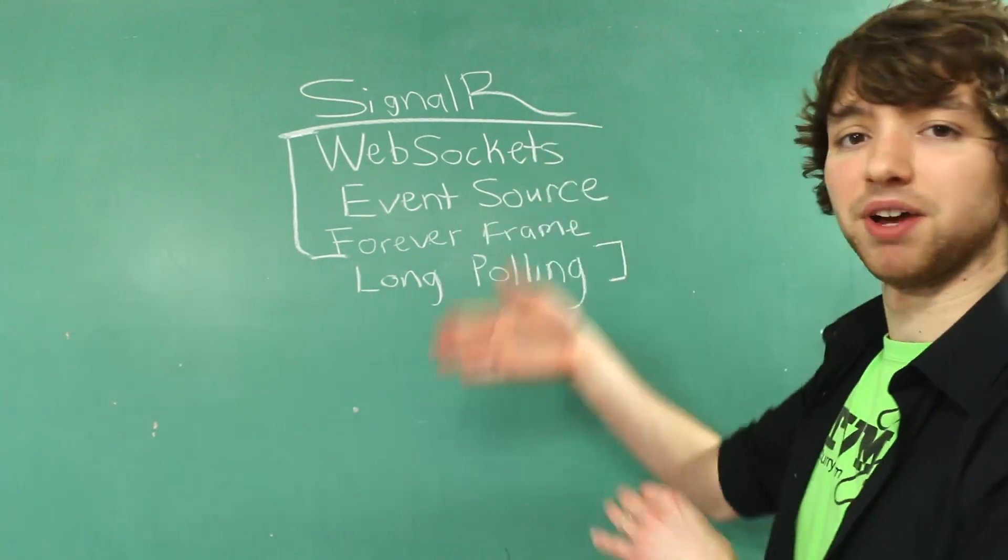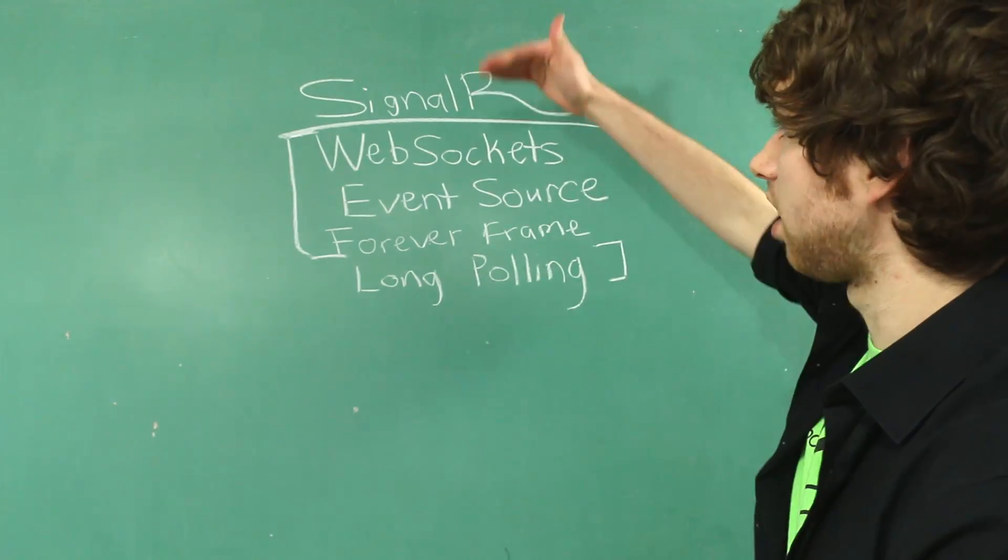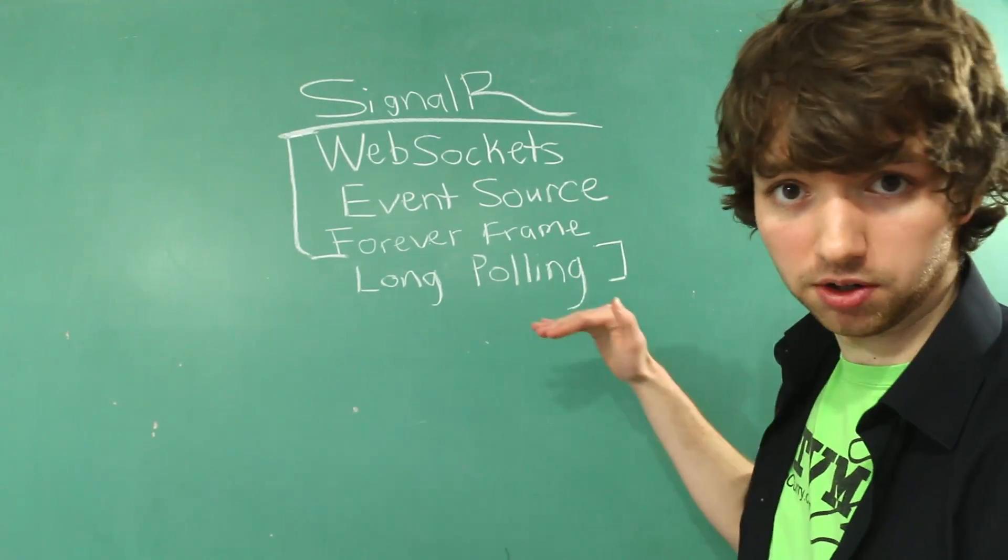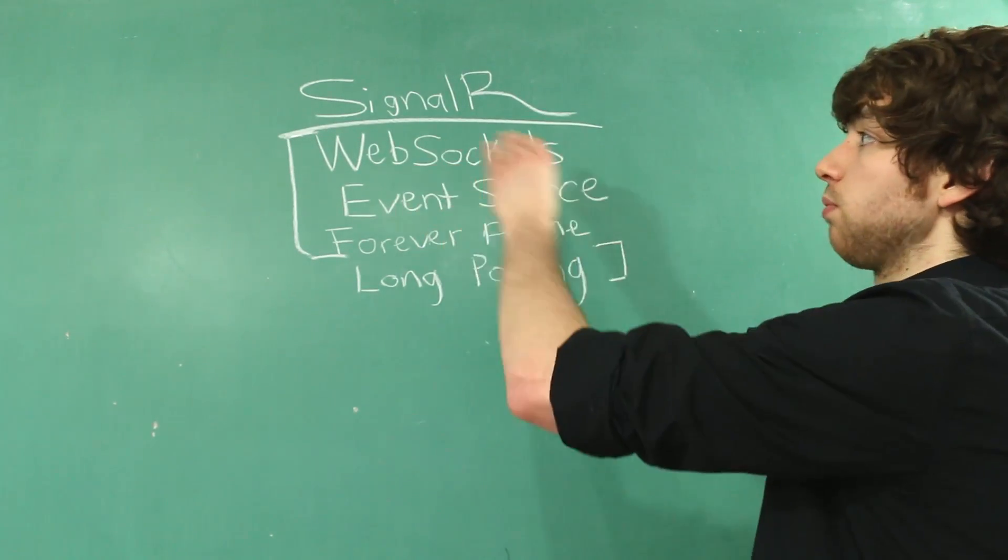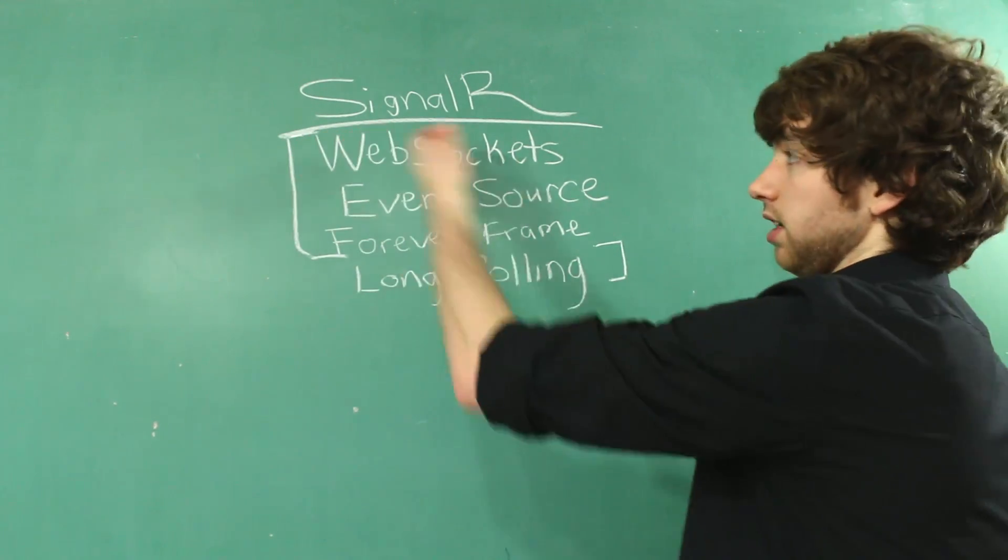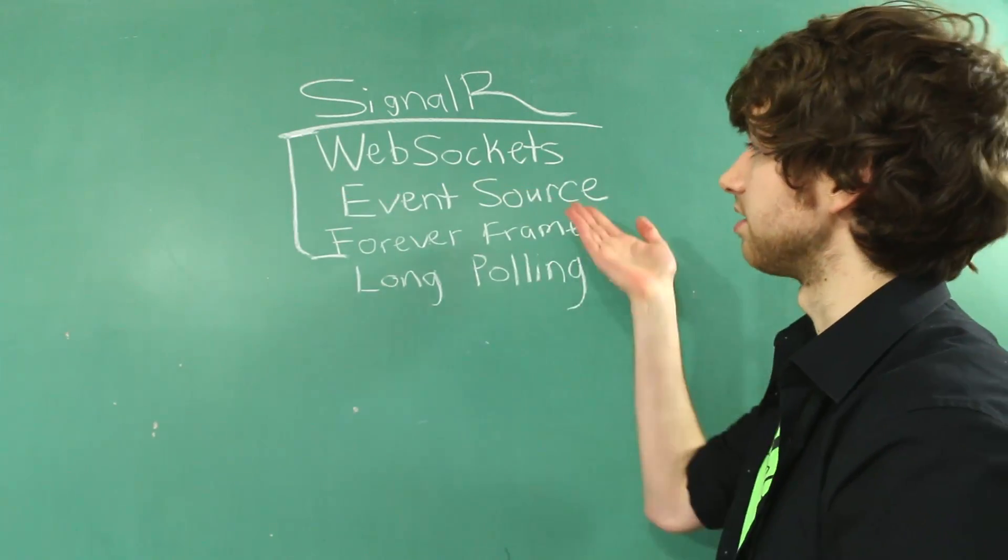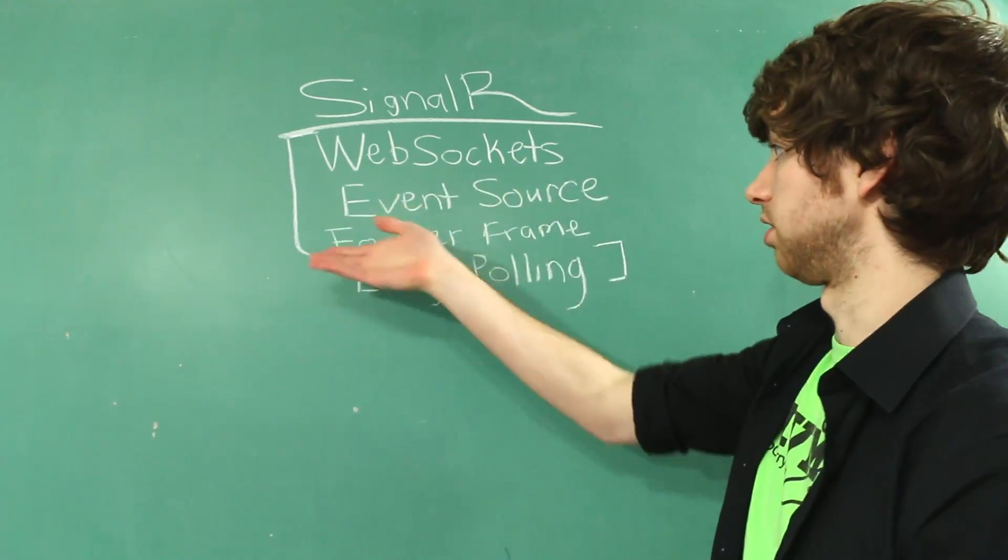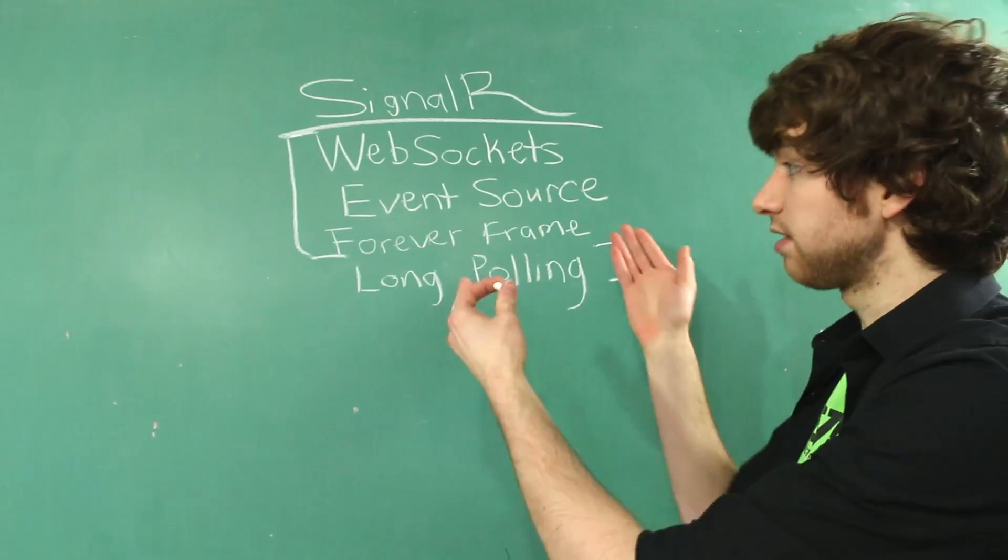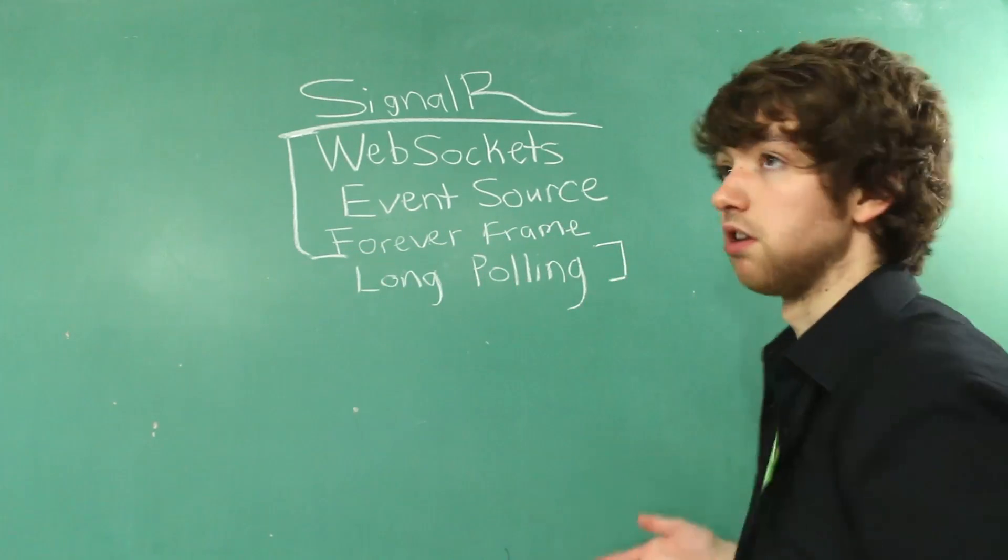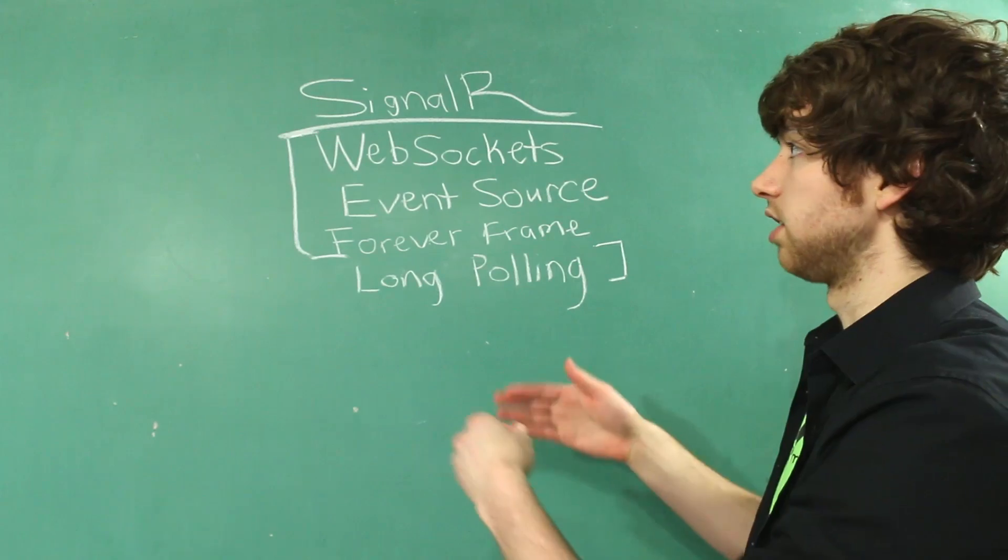And these all have their benefits, but in general, the top is the best and the bottom is the worst. The way SignalR works is it's going to try WebSockets. And if it doesn't work, it's going to go to EventSource. If that doesn't work, it's going to go to ForeverFrame. If that doesn't work, finally, it's going to go to LongPolling. That is the order.